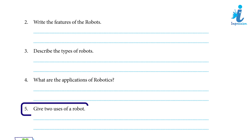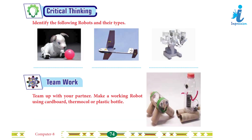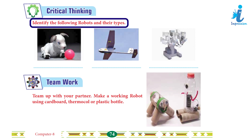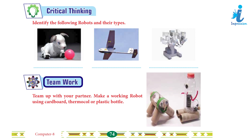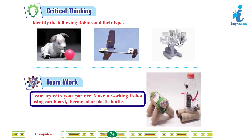Give two uses of a robot: 1. Robots used in disaster response perform hazardous or dangerous duties. 2. Robots are widely used in manufacturing, assembly, and packing. Critical Thinking: Identify the following robots and their types — ask students to do it by themselves. Team Work: Team up with your partner and make a working robot using cardboard, thermocol, or a plastic bottle.